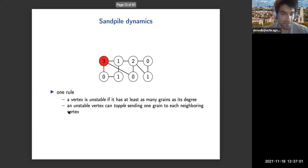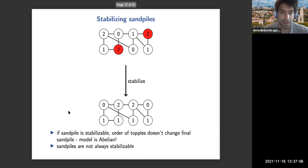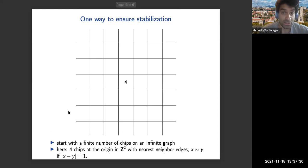If we topple both of them simultaneously, it makes this other vertex unstable, and we can just keep going. If eventually all vertices are stable, then we say that the sandpile is stabilizable. This process of toppling unstable vertices until every vertex is stable is called stabilizing. If this is possible, then the order in which we topple unstable vertices doesn't change the final stable sandpile. This is where the adjective Abelian comes from. One should note that sandpiles are not always stabilizable, but one way to ensure stabilization is to start with a finite number of chips on an infinite graph.